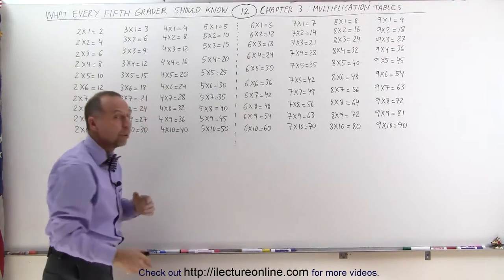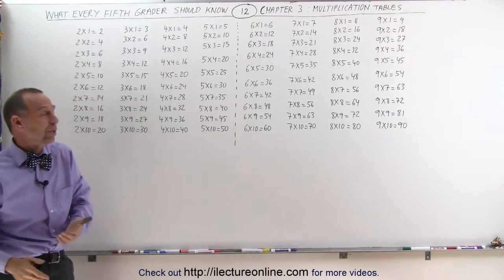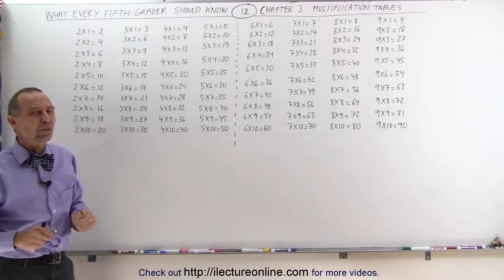So you can see that the first 4 tables, multiply times 2, multiply times 3, times 4, times 5, they're fairly easy to remember.